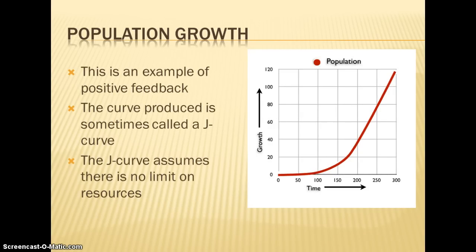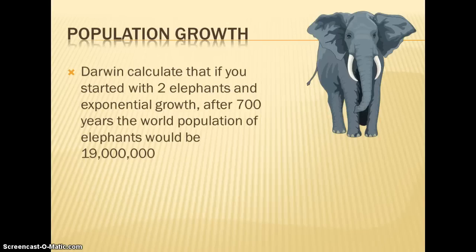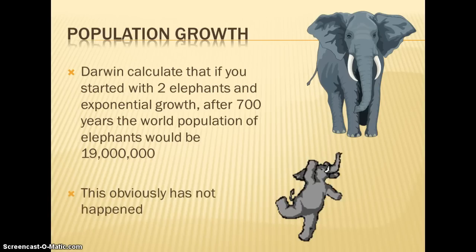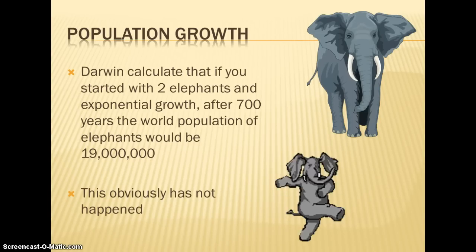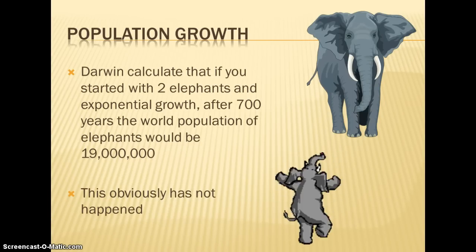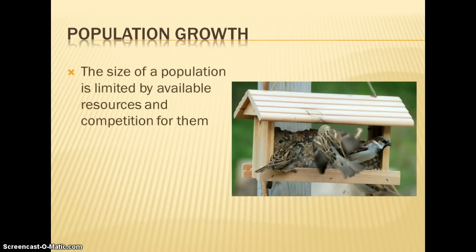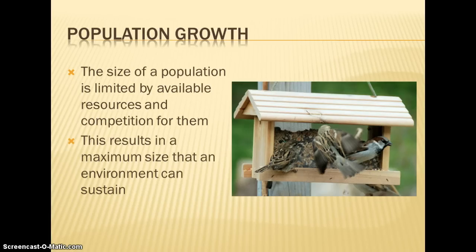The J-curve assumes there are no limits on resources, but we know that in ecosystems there are limits. Darwin said that if you start with two elephants experiencing exponential growth, after 700 years the population would be around 19 million — but we don't have 19 million elephants on earth today. Resources are limited, so population growth doesn't continue forever. Usually it's available resources and competition that limit population size. Each environment has a maximum size it can contain, known as the carrying capacity, abbreviated with capital K.